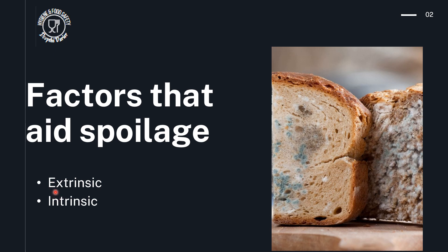Extrinsic factors are those which are external to the food — that is, they are present in the environment of the food either during food preparation, processing, harvesting, or during storage. These factors include the temperature of the room, the humidity of the room, the oxygen content, and the intensity of light present in the room. These are all the extrinsic or external factors which can aid spoilage.